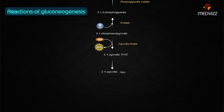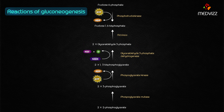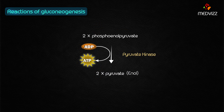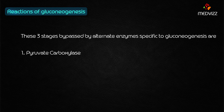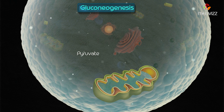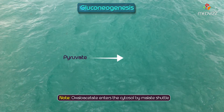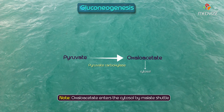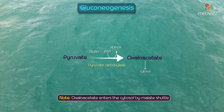Gluconeogenesis closely resembles the reversed pathway of glycolysis, although it is not completely a reversal because three irreversible steps are catalyzed by hexokinase, phosphofructokinase, and pyruvate kinase. The first bypass: pyruvate enters the mitochondria, where carboxylation of pyruvate produces oxaloacetate, catalyzed by the mitochondrial enzyme pyruvate carboxylase, which requires the coenzyme biotin and ATP.